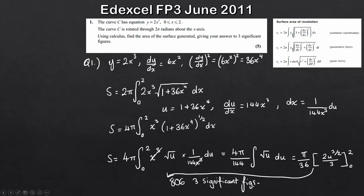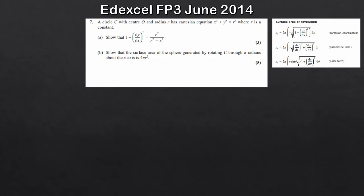Using substitution to integrate is very common with these types of questions. As long as you're confident with integration by substitution, you shouldn't have too many issues. That's the end of that question. Now for the final question — quite a good one. We've got a circle C with centre O and radius r, with Cartesian equation x² + y² = r². Part a asks us to show that 1 + (dy/dx)² = r²/(r² − x²).